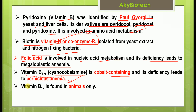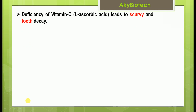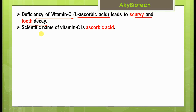Vitamin B12 is found in animals only. The yellow enzyme, vitamin B2, was discovered by Warburg in 1934 in yeast. Deficiency of vitamin C (L-ascorbic acid) leads to scurvy and tooth decay.